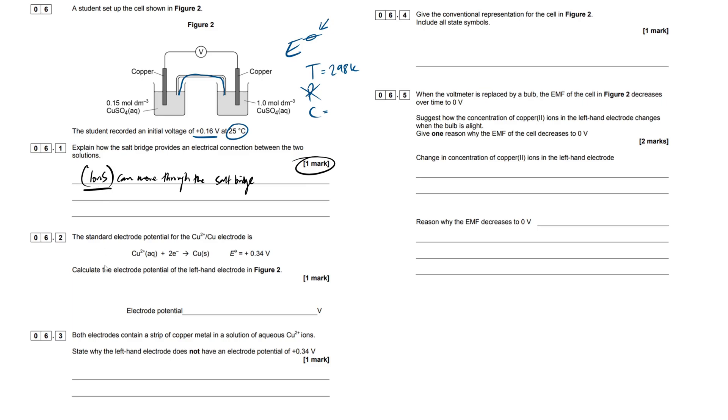Now, next question, we're getting through this real quick. The standard electrode potential for the copper 2 plus copper electrode is this right here. Now, this is reduction, gain of electrons. The standard for electrode potentials is always to make the forward direction of the equation the reduction. And we have a 0.34 voltage here, so positive when compared with the standard hydrogen electrode. Now, we need to calculate the electrode potential of the left-hand electrode in figure 2.